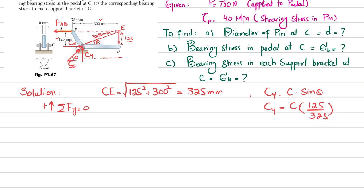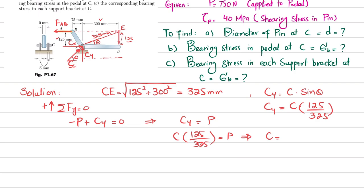So C_y equals C times 125/325. Setting sum of forces in Y equal to zero: minus P plus C_y equals zero, so C_y equals P. Since C_y equals C times 125/325 equals P, from here C equals 2.6 times P. With P equal to 750 newtons, C equals 1950 newtons.